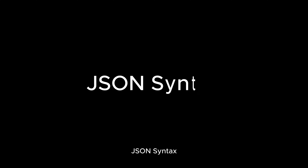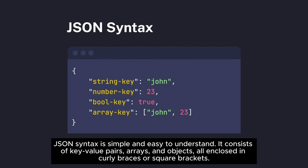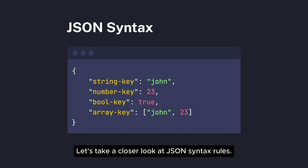JSON Syntax is simple and easy to understand. It consists of key-value pairs, arrays, and objects, all enclosed in curly braces or square brackets. Let's take a closer look at JSON syntax rules.